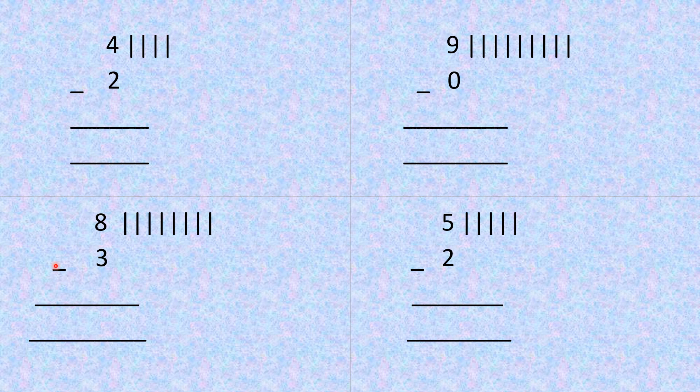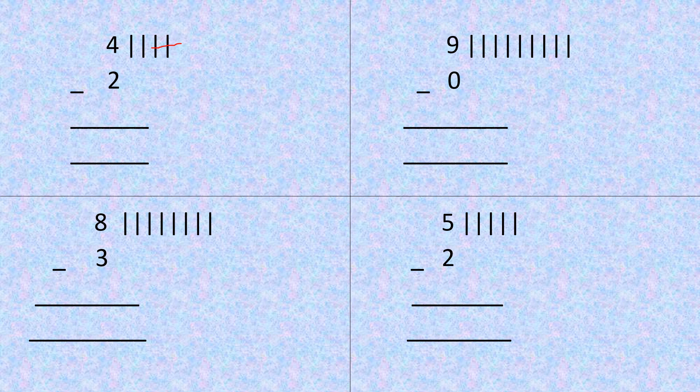There are a few more examples of subtraction using line method. This is four minus two. So I have made four lines — one, two, three, four. How many lines do I need to cut? Two lines. Cut these two lines. Now we are left with how many lines? One, two. Answer is two.